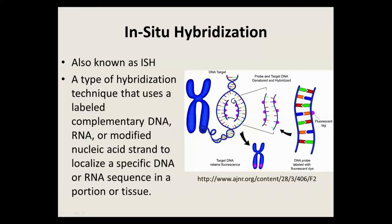For example, we can identify a gene locus in a chromosome, or a centromere in a chromosome, so that you can actually visualize how many chromosomes they have or whether there is an amplification of a gene locus, and so forth.